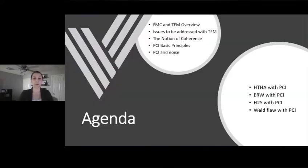So here's the agenda for today. First, we're going to talk about FMC and TFM, a quick overview of the methods. We will talk about the issues to be addressed when we are talking about TFM. Then we'll cover the notion of coherence, the basic principles for phase coherence imaging and why noise becomes important. The second part will be about actual experimental results on different types of flaws: HTHA results, ERW or electric resistance welding, H2S damages or stepwise cracking, and finally some weld flaws using phase coherence imaging.